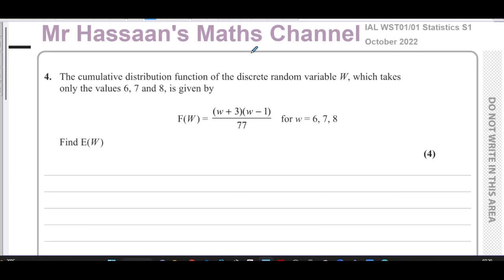They've told us that the cumulative distribution function means the sum of the probabilities as you go along. The probability of getting a 6 is given by this if you substitute 6 into here. The probability of getting a 6 or a 7 cumulative, when you put 7 into here, that will tell you the probability of getting a 6 or a 7.